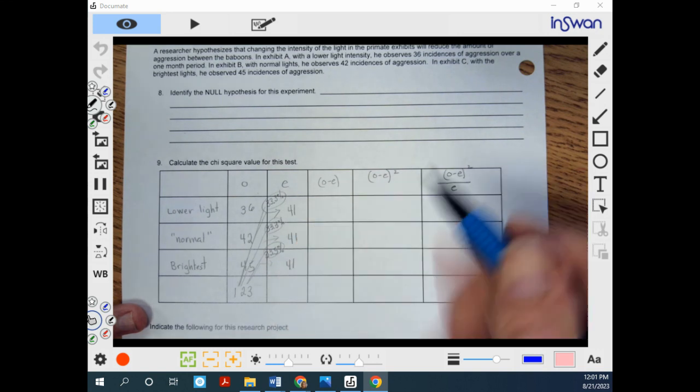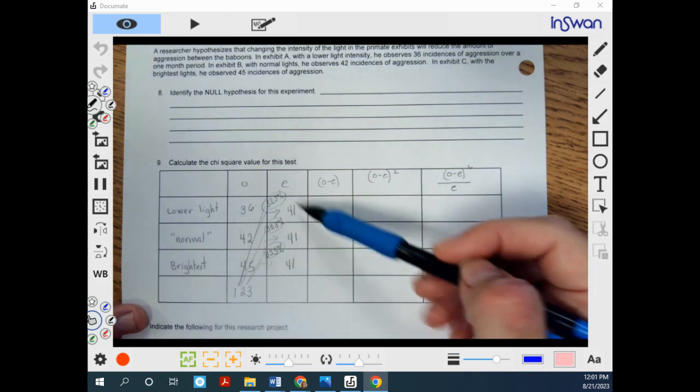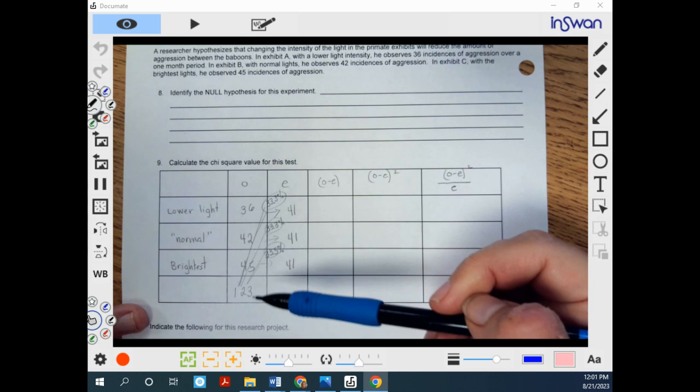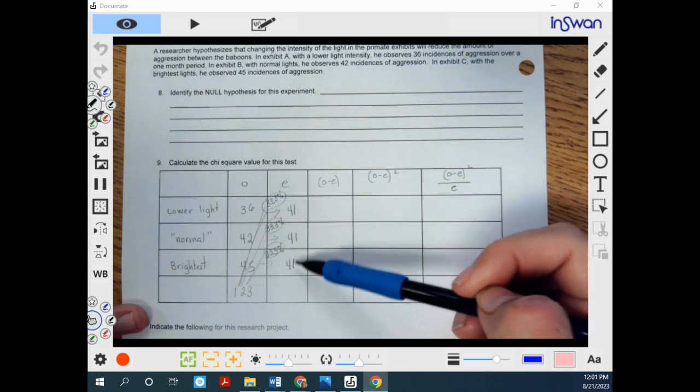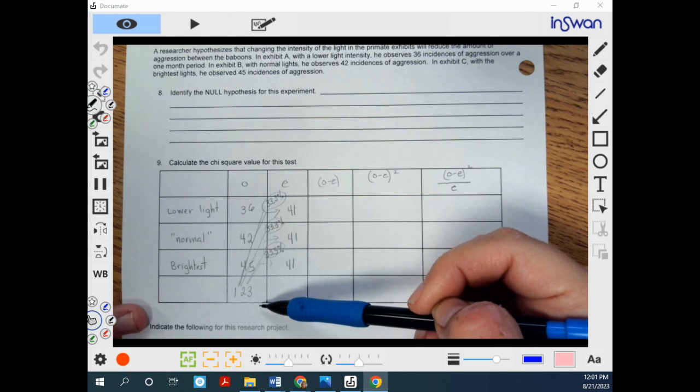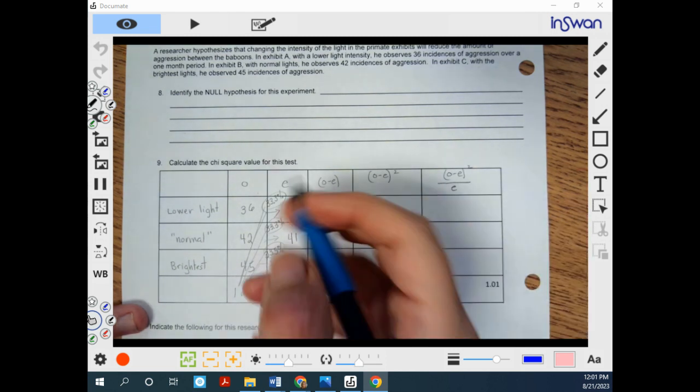And if you think about it, this is saying we're going to expect the light is not having an effect. Now, we have an even number if this is how many incidences that normally are occurring.